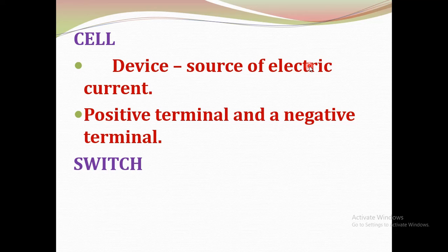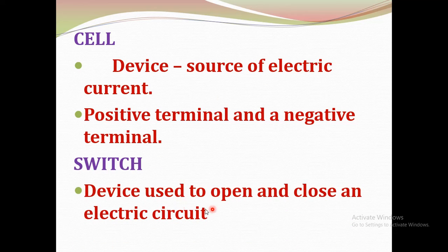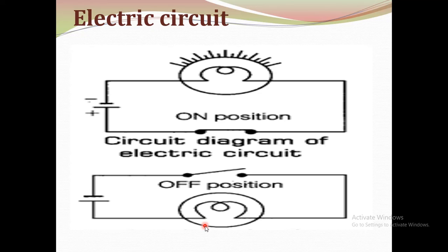A switch is a device used to open and close an electric circuit. It has two terminals to which wires are connected. When the switch is on, the electric circuit is said to be complete and the bulb glows. When the switch is off, the electric circuit is incomplete and the bulb does not glow.